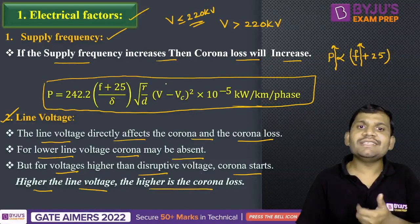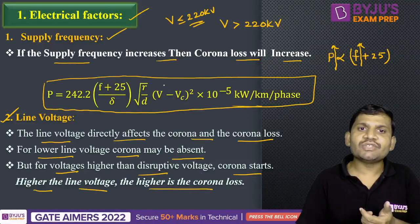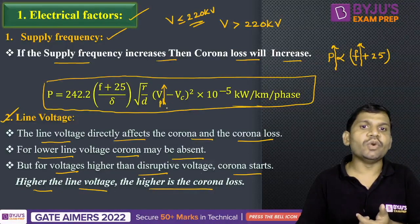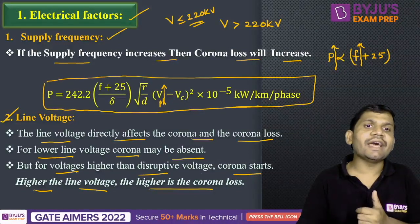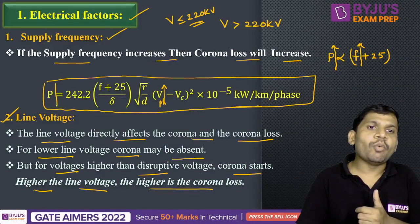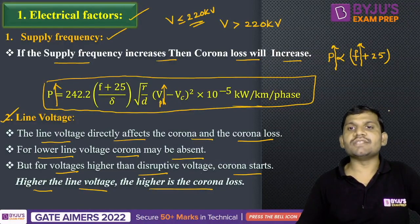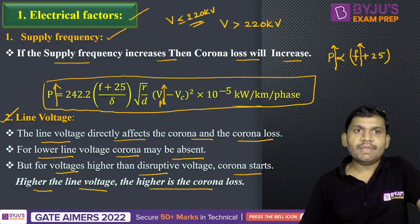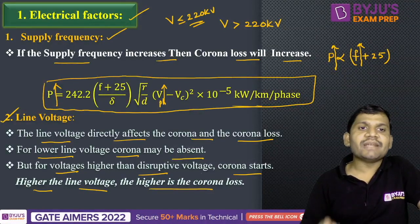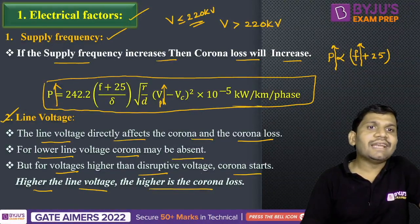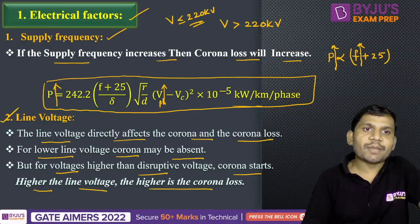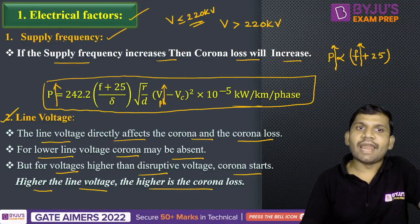If the line to line voltage is high — actually it is a phase voltage — then the corona loss is also high. Like this, corona loss depends on the line voltage. These are the electrical factors: supply frequency and line voltage.